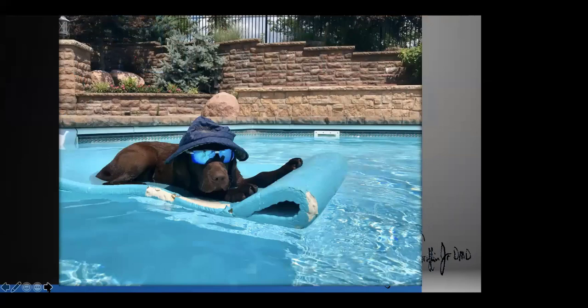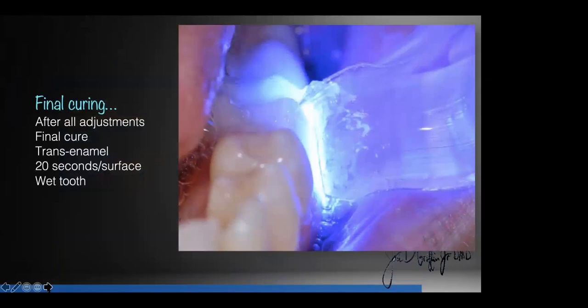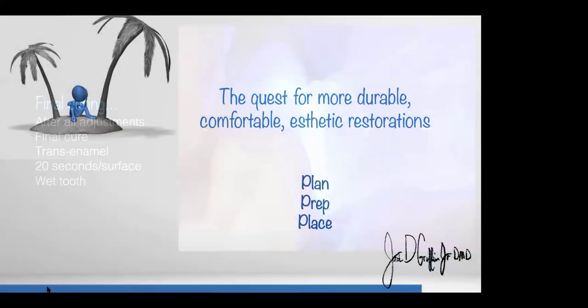Let's get to things that have been around a lot longer. Here's my dog Bentley — he likes to swim and is concerned about UV rays, so he wears polarized sunglasses and a hat. He was a yellow lab before he started tanning, now he's a chocolate lab. Speaking of tanning and lights — final curing. A lot of us don't polymerize very well. No matter what materials we use, even if they're dual cure, we're going to shine a light at the end of our procedure. Trans-enamel curing after we're done finishing and polishing — we have the assistant cure 20 seconds from each surface for any restoration we do. We don't want to overheat the tooth, but we certainly don't want to under-polymerize the restoration.